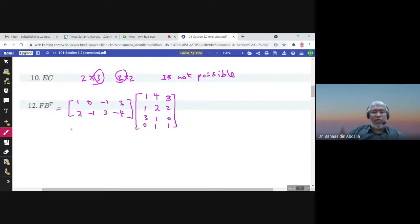Can we multiply these two matrices? What is the order of F? 2 by 4. What is the order of B transpose? 4 by 3. So yeah, we can multiply them, and the answer would be two rows and three columns. I will use the calculator because I have here 4 to multiply. So let us multiply this row by this column.